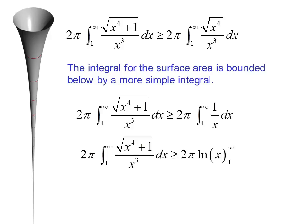But we know the antiderivative of 1 over x dx. So now our integral is greater than or equal to 2 pi times the natural log of x evaluated from 1 to infinity. Since the limit as b approaches infinity of 2 pi ln x evaluated from 1 to b is infinity, the surface area is infinite.